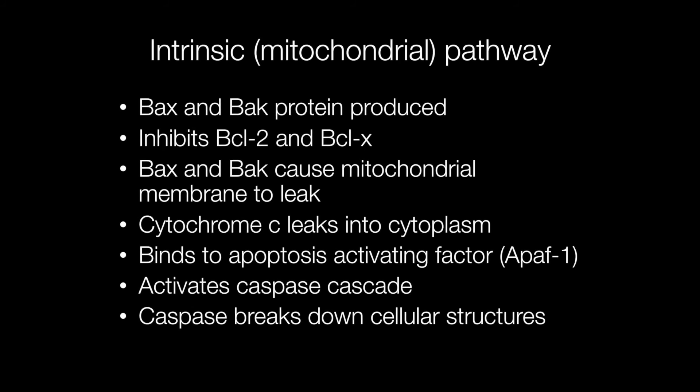Starting with the intrinsic pathway: BCL2 and BCLX are inhibited. This allows BAX and BAK proteins to be produced. They damage the mitochondrial membrane, causing it to leak cytochrome C into the cytoplasm. This binds to apoptosis-activating factor, or APAF1, and this activates the caspase cascade. Caspase is an enzyme that breaks down cellular structures, but at the beginning of the cascade it starts off as a catalyst, resulting in more caspase being formed.